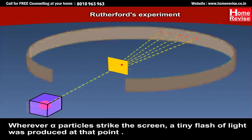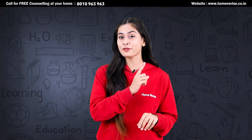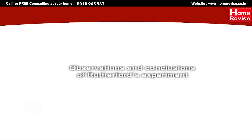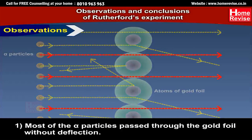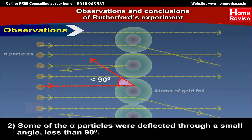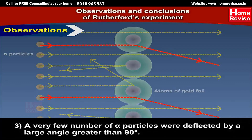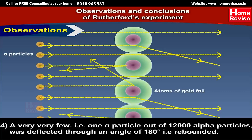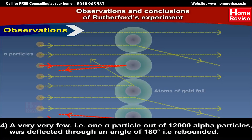Whenever alpha particles would strike the screen, a tiny flash of light was produced at that point. Observations of Rutherford's Experiment: Most of the alpha particles passed through the gold foil without deflection. Some of the alpha particles were deflected through a small angle less than 90 degrees. A very few number of alpha particles were deflected by a large angle greater than 90 degrees. And a very, very few — that is, one alpha particle out of 12,000 — was deflected through an angle of 180 degrees, meaning it rebounded.